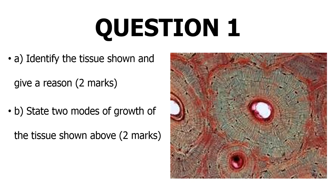We are looking at the histology of the connective tissue system. These are the kinds of questions you expect to get in a practical exam — a marathon exam or picture exam — where you get a picture and are asked to identify the tissue while giving a reason. The second part of the question asks you to state two modes of growth of the tissue shown.